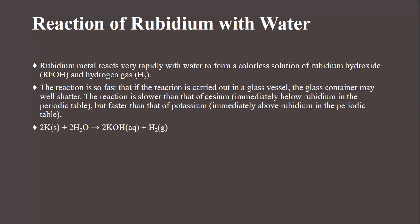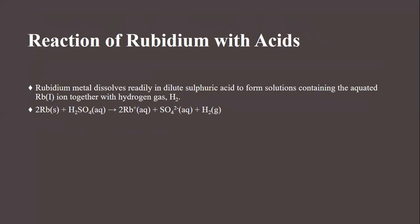The third reaction discussed here is rubidium with acid. Rubidium metal dissolves readily in dilute sulfuric acid to form a solution containing aquated rubidium ions together with hydrogen gas. The chemical formula for this reaction is also shown in this slide.